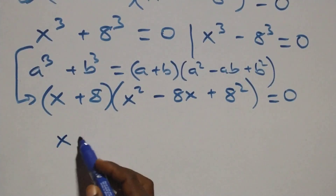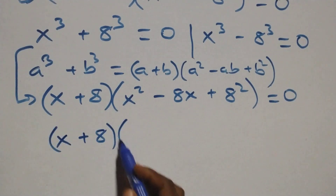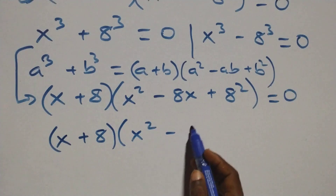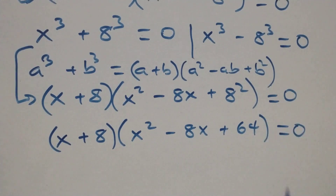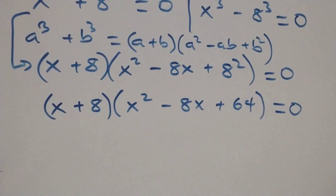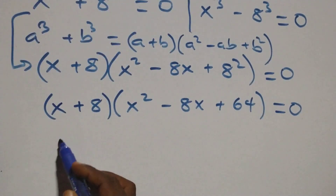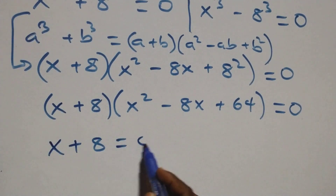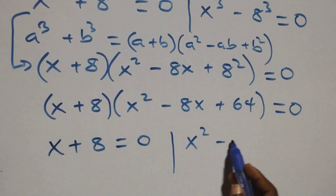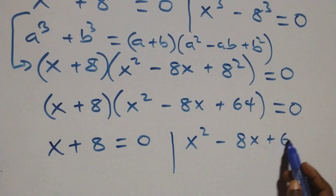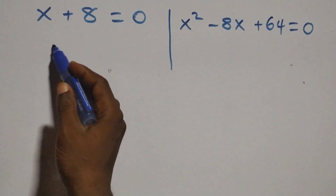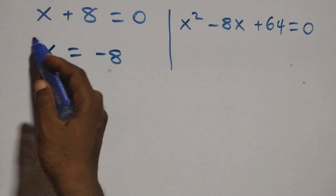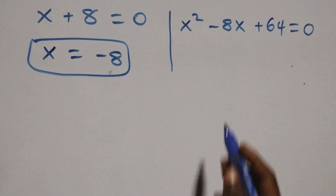That is, this is the same thing as x plus 8 times x squared minus 8x plus 64 equals to 0. Then here we have two cases as well: the first one, x plus 8 equals to 0, or we have x squared minus 8x plus 64 equals to 0.